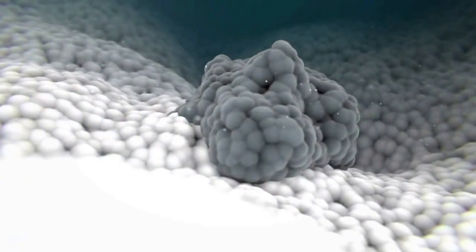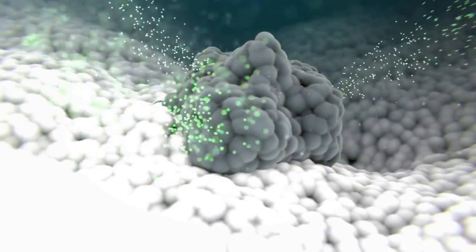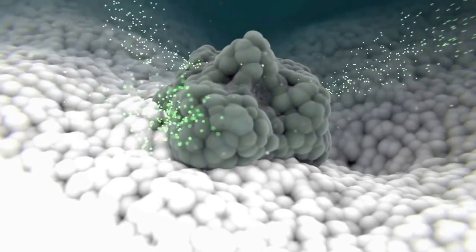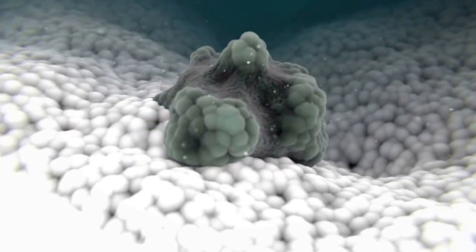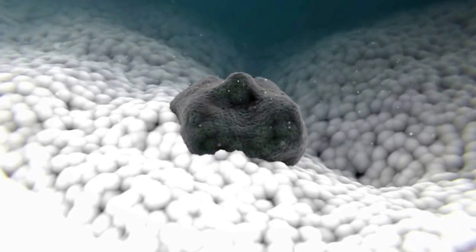But what if we interfere with telomerase in precancerous cells somehow, removing the gene that it's made from, or using drugs that destroy it or inactivate it? Then those cells would die normally, stopping cancer before it starts.